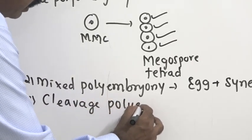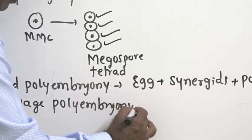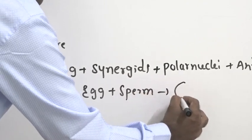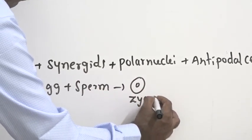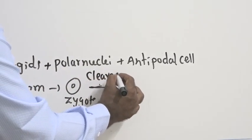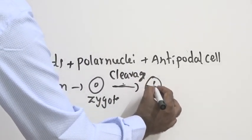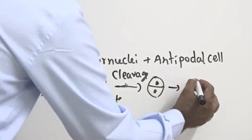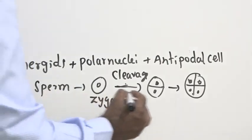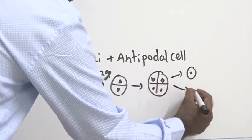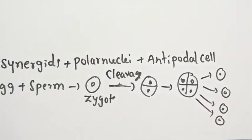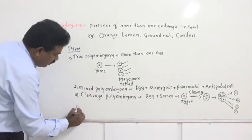In cleavage polyembryony, egg and sperm unite to form diploid zygote. It is a single cell. It undergoes repeated rapid mitotic division. Actually, that cleavage word we used in where? Animals. But in plants also, that word is used. As a result, what happens? Two cells, four cells, like the cells are formed. If these cells separate in early phase, single cell becomes a new plant that processes what is called cleavage polyembryony. Last one, adventive polyembryony.